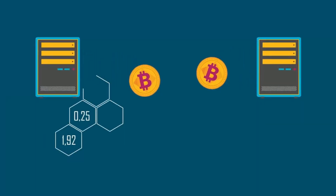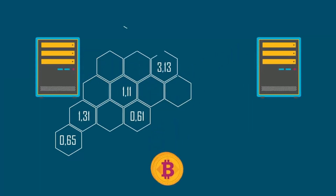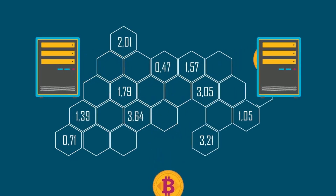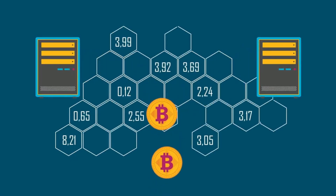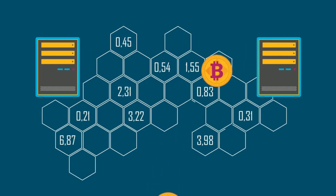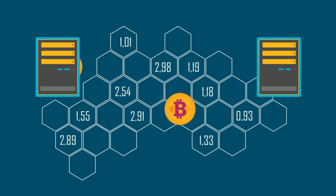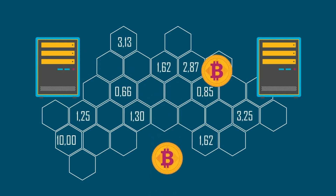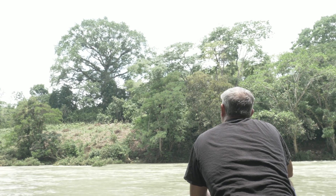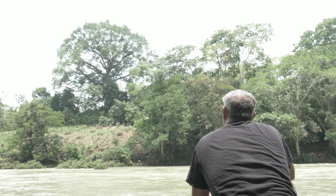Fungibility — what is it? An asset can be exchanged for a comparable asset without losing value if it is fungible. It outlines an asset's qualities, including its value and divisibility. For instance, just as one dollar is equal to another dollar, one bitcoin is always equal to another bitcoin.